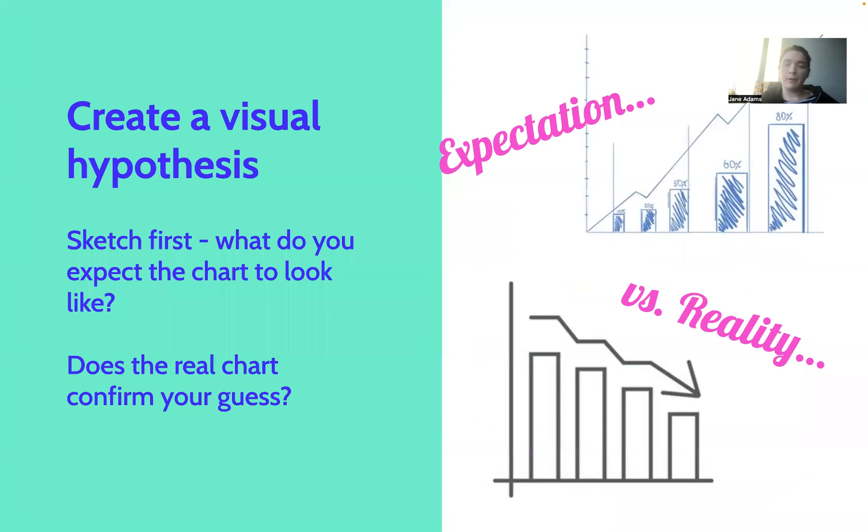Next, what we want to do is create a visual hypothesis. So oftentimes, what we want to do, our inclination is to start coding right away. But sometimes it's best to actually sketch first. So just grab a piece of paper and a pen, doesn't have to be beautiful. But what do you expect the chart to look like? So you might have some theory that if I plot time on the x-axis and I plot a value on the y-axis, I would expect my bars to be increasing in size. But oftentimes, our expectation does not meet our reality, both in life and in visualization. So create a visual hypothesis. And then if what you code doesn't actually match what you had sketched out, that's a story in and of itself.